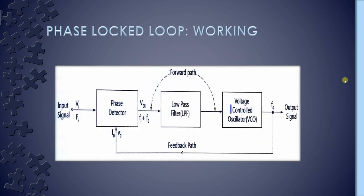The functional blocks of the phase locked loop are: phase detector, low pass filter, and voltage controlled oscillator. The phase detector acts like a comparator, which compares the output frequency with the input frequency. When we apply the input frequency to the phase detector, it provides a voltage error which is DC in nature.